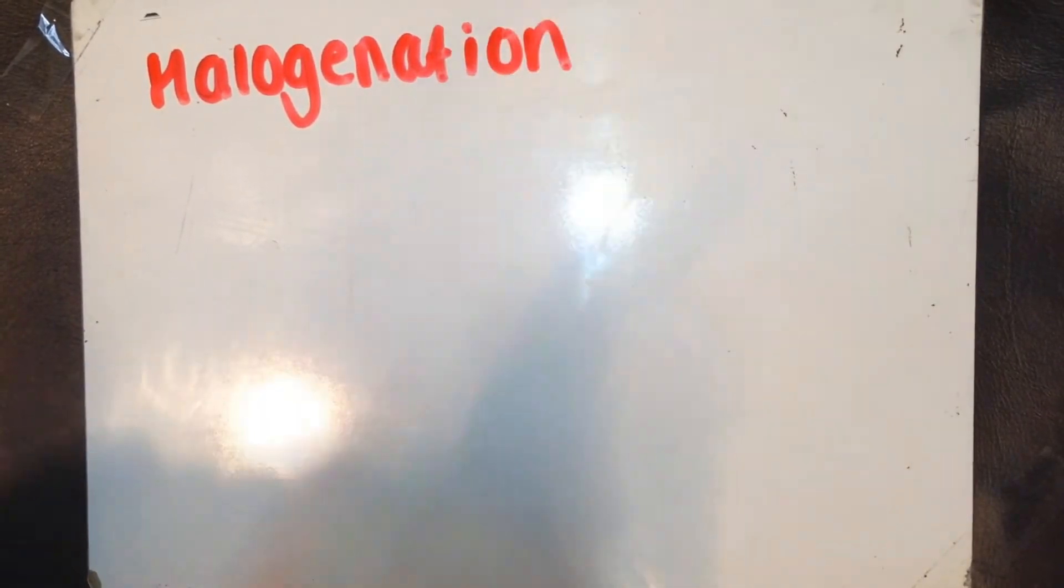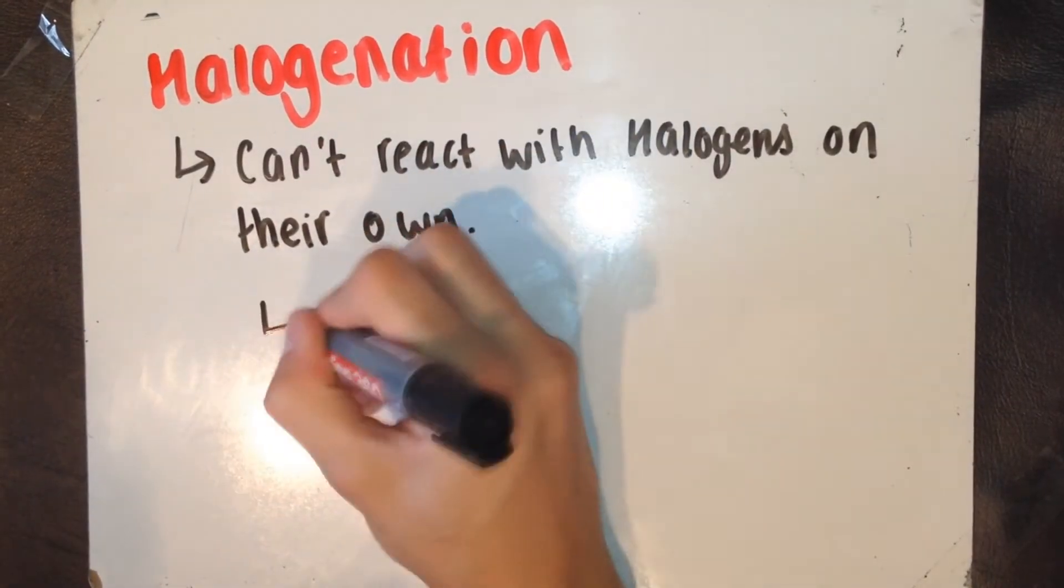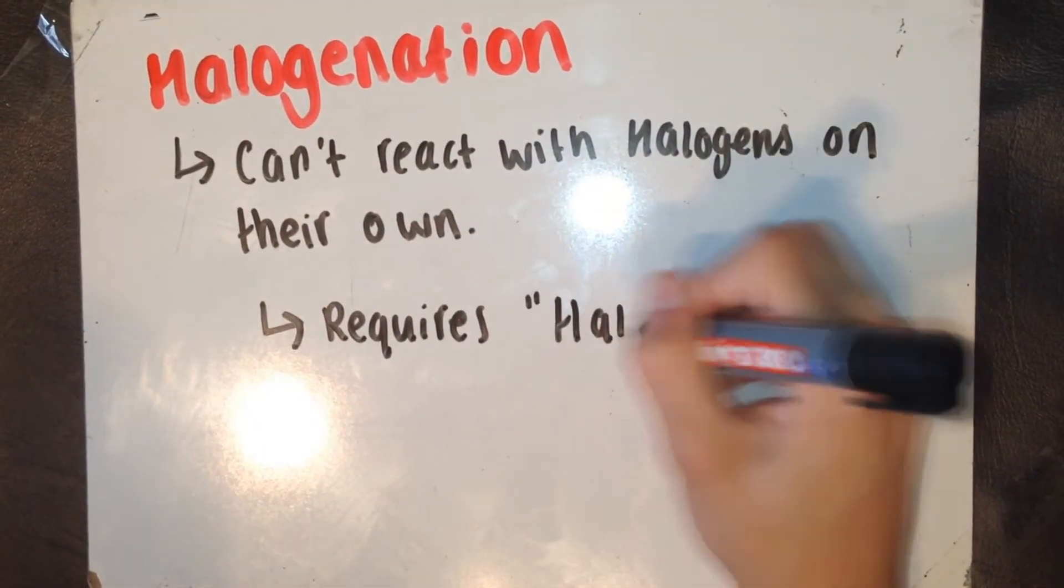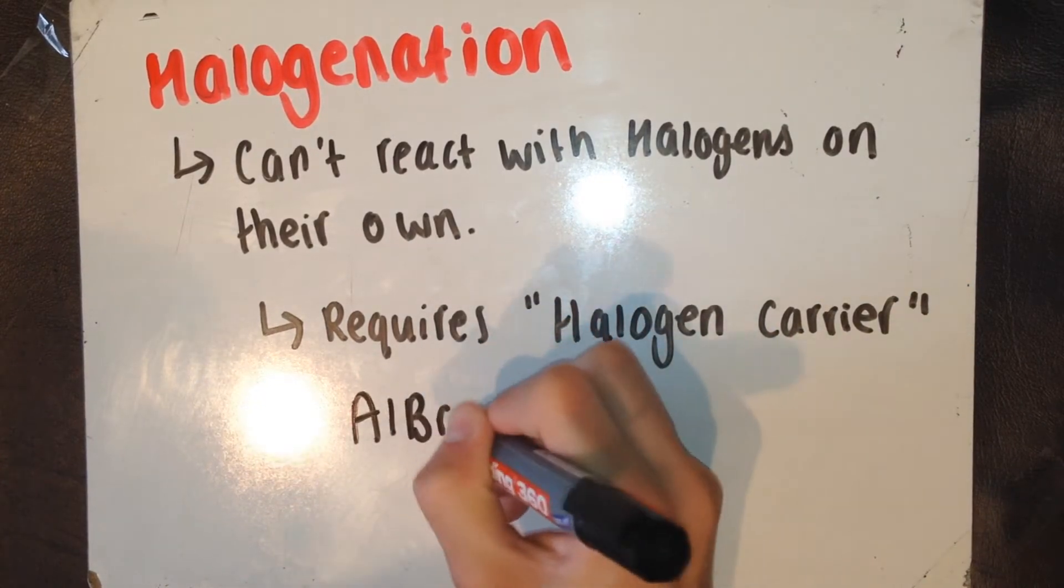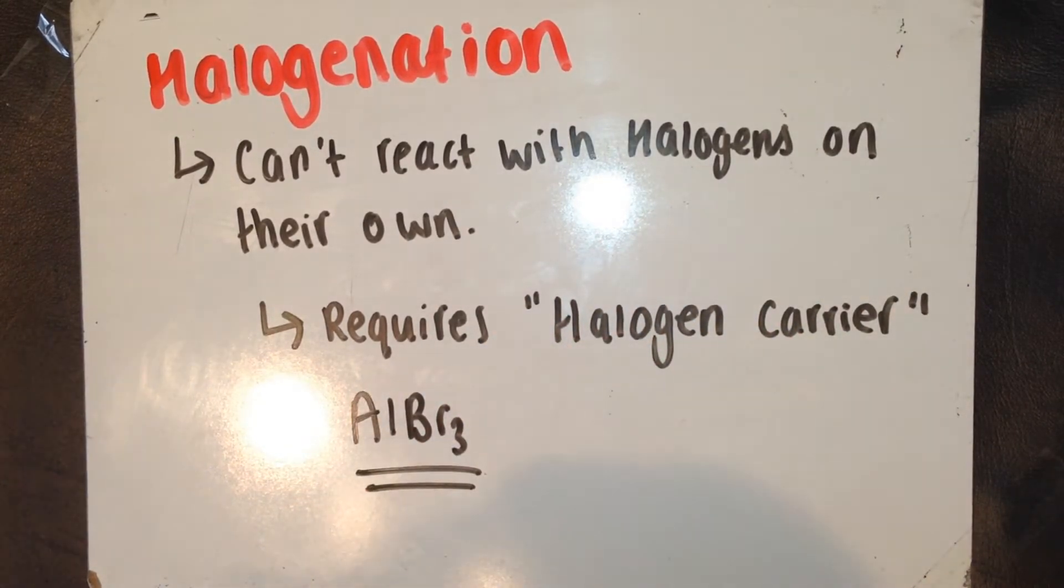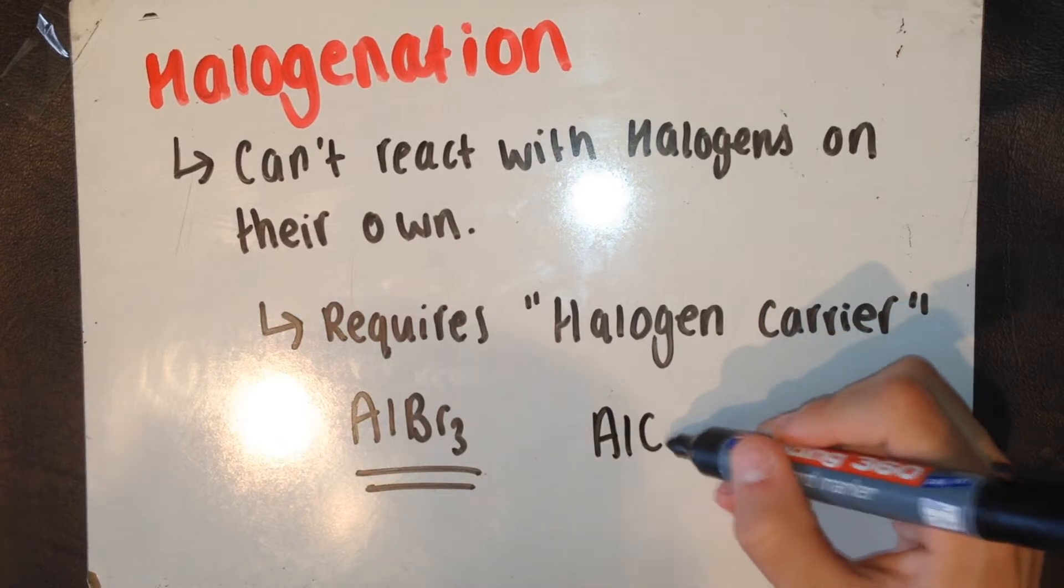Next, I'm going to go on to halogenation of benzene. Benzene doesn't react with halogens on their own. However, in the presence of a special type of catalyst, called a halogen carrier, benzene can react with halogens. Common halogen carriers for the chlorination and bromination of benzene include AlBr3 and AlCl3.